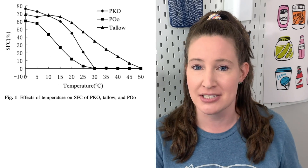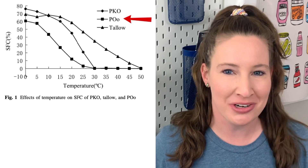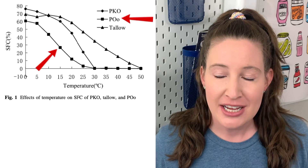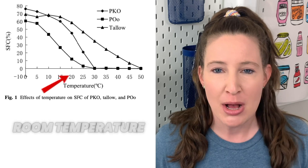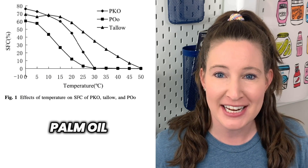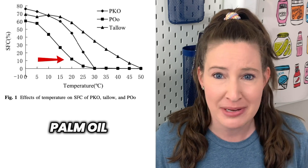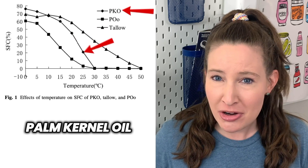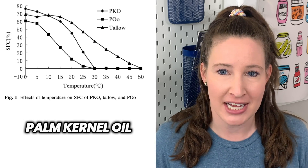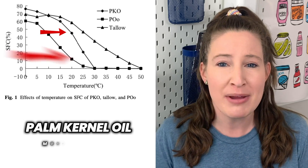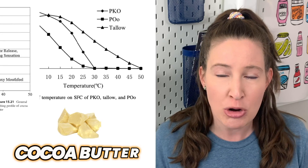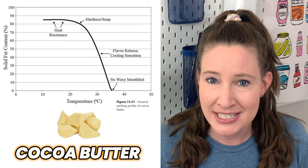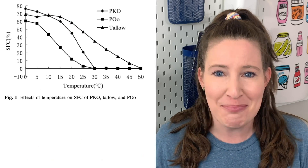Let's look at some other natural fats and at what temperatures they melt — same graph of solid fat content versus temperature. Palm oil, the line with the square symbols: at room temperature, around 20 degrees Celsius, palm oil has a solid fat content of only 10%, which is way too low — it's going to be basically liquid-like. Palm kernel oil, the line with the diamonds, fares a bit better with about 50% solid fat content at room temperature. But remember, cocoa butter was way up at 80%, so 50% is still much lower.